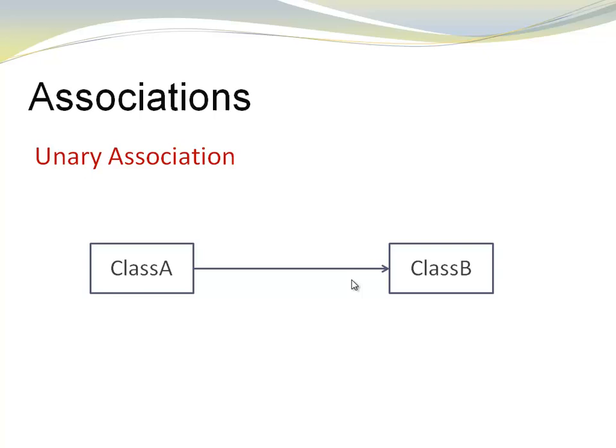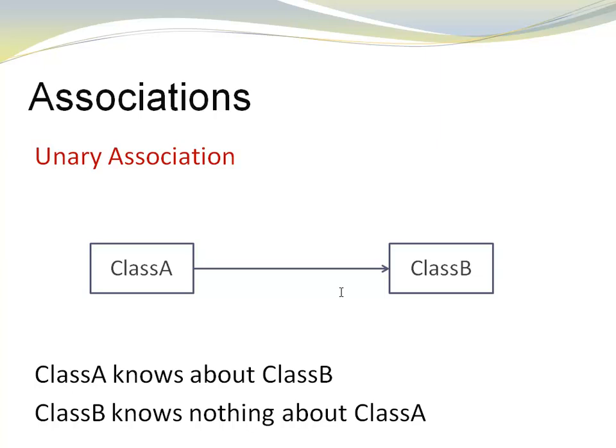Between the classes, we have a single line with one arrow. Class A knows about class B. Class B knows nothing about class A. That's what this association means.